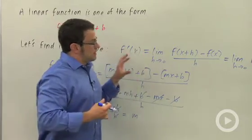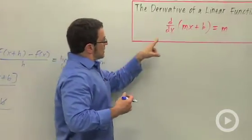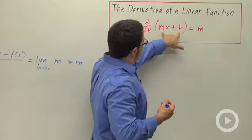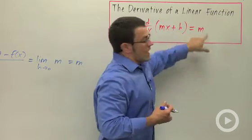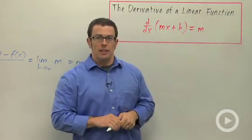Now, another way to say this relationship between the linear function and its derivative is that the derivative with respect to x of mx plus b is m. This is the derivative of a linear function.